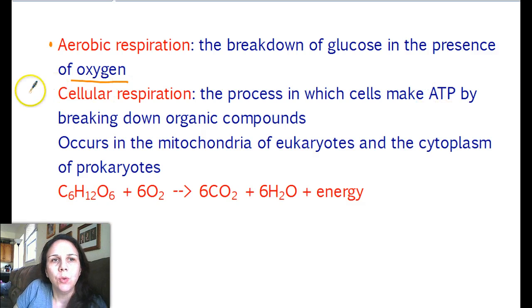We refer to it or another word that's synonymous to it is cellular respiration, which is a type of aerobic respiration. That's just what we call what we do in our mitochondria. So the process in which cells make ATP by breaking down organic compounds. Now glucose is the main organic compound that gets broken down, but it can be anything.